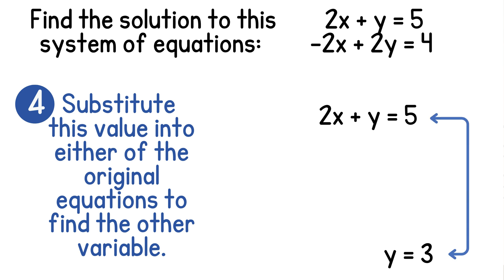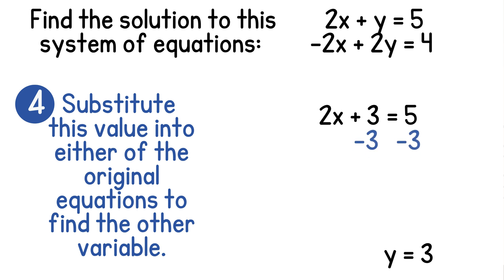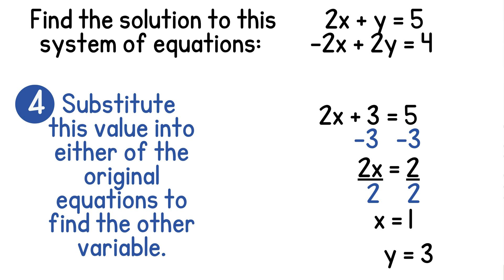So we'll replace y with 3. This gives us 2x plus 3 equals 5. To solve for x, we'll start by subtracting 3 on each side. This gives us 2x is equal to 2. Now we'll divide both sides by the coefficient of x, giving us x equals 1. So the solution to this system is (1, 3).